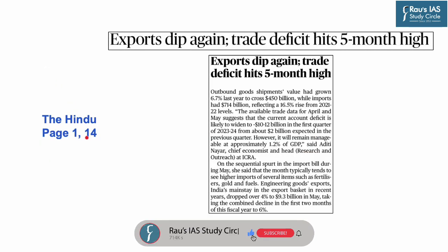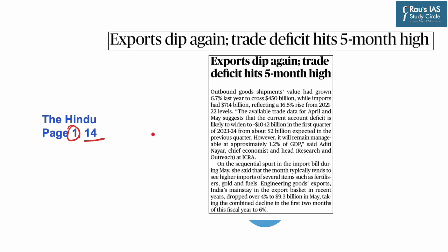Starting off with the first article of the day, which appeared on page 1 and 14 of today's Hindu newspaper. This article reports that India's merchandise exports have fell by 10.3% in May, whereas the imports have contracted at a slower rate of 6.6%. This has resulted in a rise in trade deficit to a 5-month high of about $22 billion.